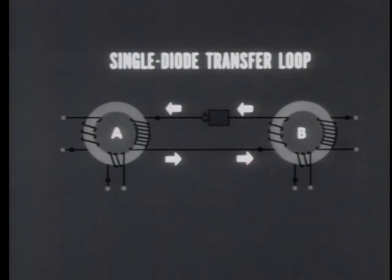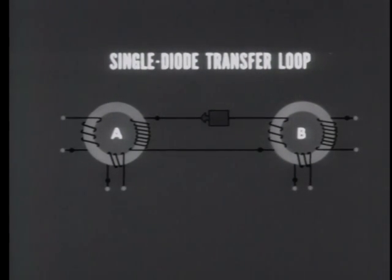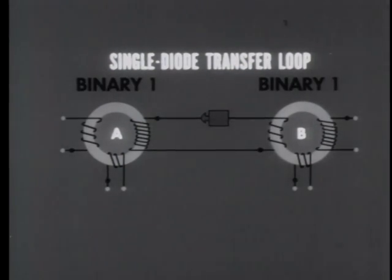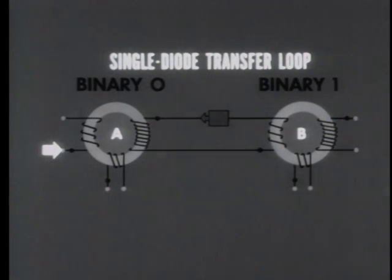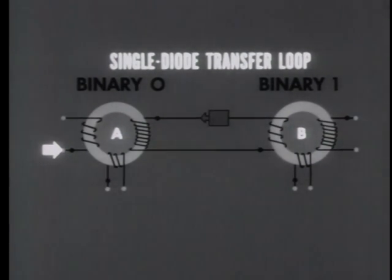With the diode reversed, current flows into the dot side of the input winding at core B. To demonstrate the loop as we have it here, we'll assume that both cores are initially at binary one. A pulse is applied to the dot side of the input winding of core A, switching it to the binary zero state. The change in flux in core A induces an output on the dot side of the output winding. But the diode stops the flow of current in this direction. Core A now holds a zero; core B remains at one.